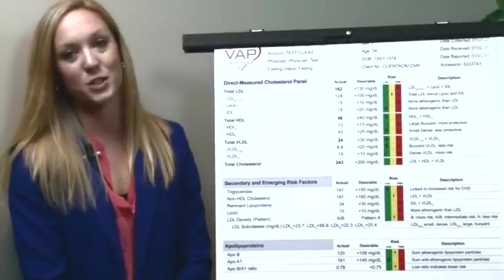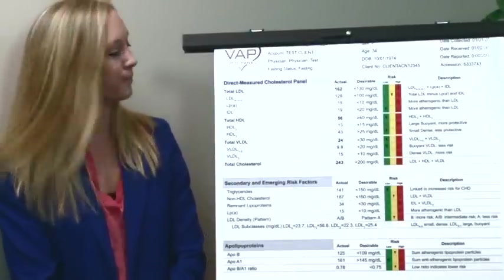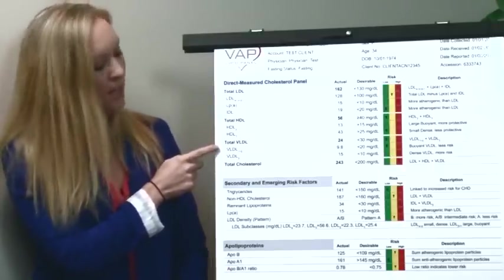Next, we're going to talk about triglyceride rich disorders. This is a combination of abnormalities in any of these values: IDL, HDL2, VLDL,